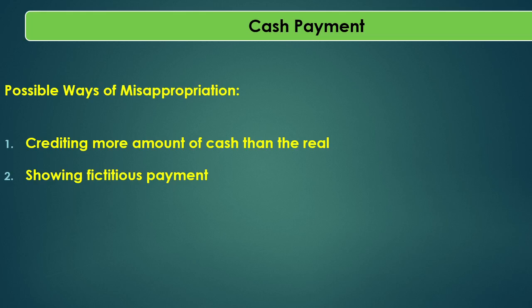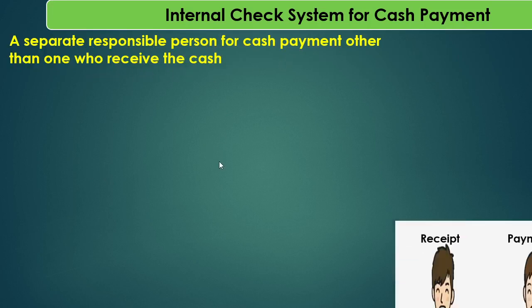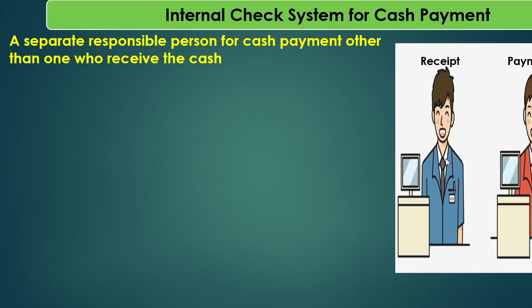Here is the internal check system for cash payment. The first step is to have a separate responsible person for cash payment, other than the one who receives cash. For receipts there should be a separate cashier, and for payment there should be a separate person — the same person cannot handle both receipts and payments. If the same duty is given to one person, there will be a higher risk for the company of manipulation or misappropriation of cash.